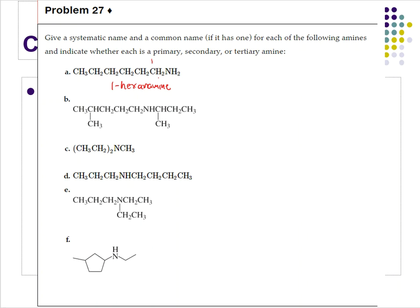For B, the nitrogen is sandwiched in the middle and I need to find the longest carbon chain. On one side it's one, two, three, four, five — or one, two, three, four, five — it's five either way. On the right-hand side it's only one, two, three. So the longest chain is the five-carbon one. This is going to be a pentane, so I drop the E and add amine: pentanamine. This nitrogen is at carbon number one.